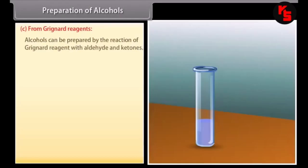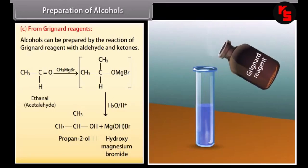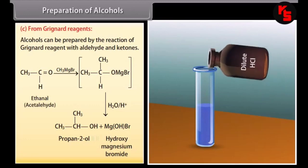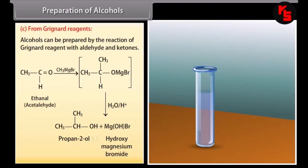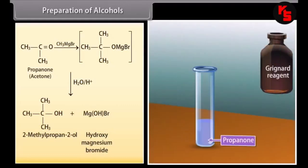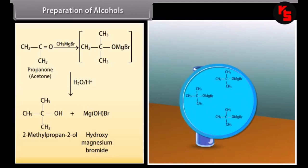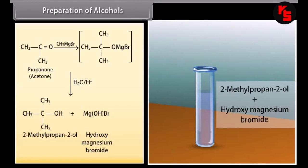Preparation of alcohols from Grignard reagents: alcohols can be prepared by the reaction of a Grignard reagent with aldehydes and ketones. A Grignard reagent reacts with ethanal to form a product which decomposes with dilute HCl to give propan-2-ol and hydroxymagnesium bromide. A Grignard reagent reacts with propanone to give 2-methylpropan-2-ol and hydroxymagnesium bromide.